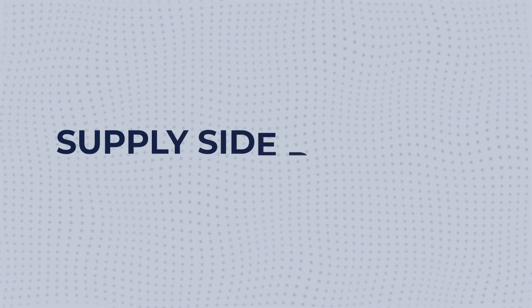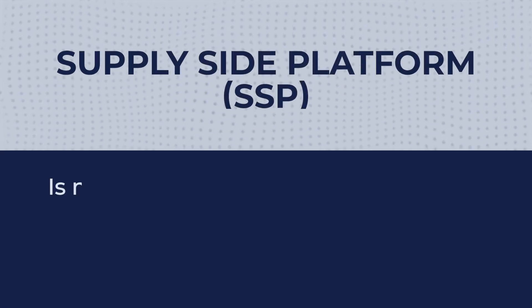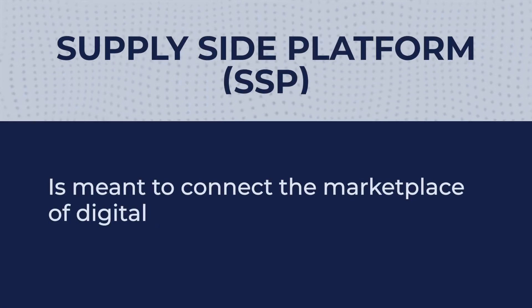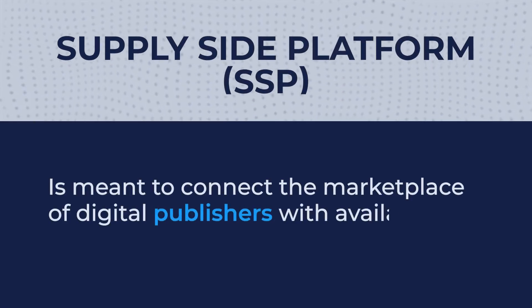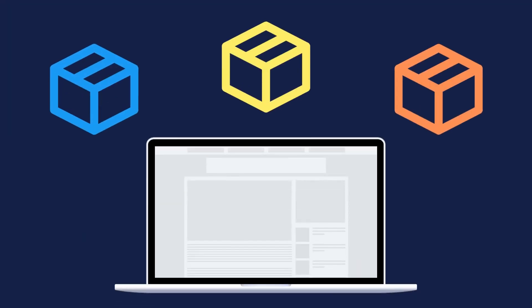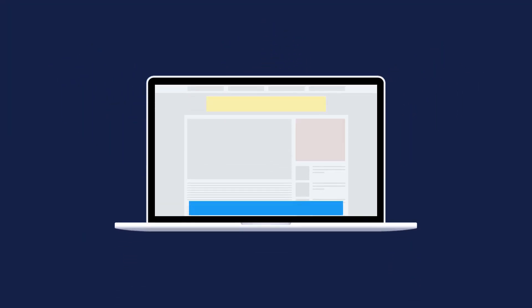A supply-side platform, on the other hand, is meant to connect the marketplace of digital publishers with available ad content. SSPs programmatically bid on available ad inventory on publisher websites or apps, which will then be displayed on the websites provided by the SSP.